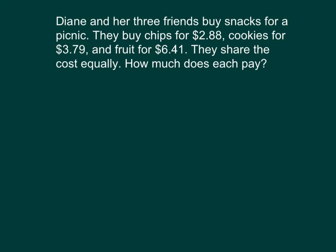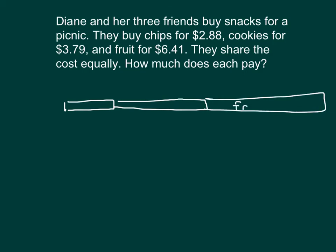Let's use a tape diagram. We have some items that they end up buying. And then so they buy chips for $2.88. And we have cookies for $3.79. And we have fruit for $6.41. So this one here is fruit. Cookies. And chips. So the chips were $2.88. The cookies were $3.79. And finally, the fruit was $6.41. Do you see what we do with those three numbers there? What do we do first?